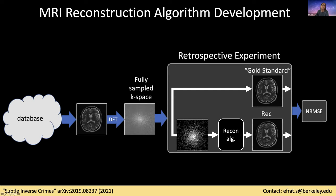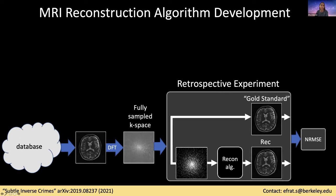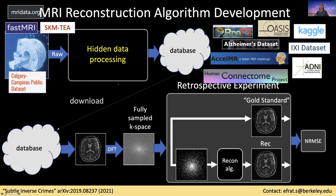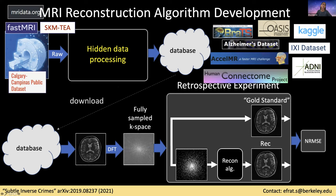Such experiments assume that the fully sampled k-space data are raw data obtained from an MRI scanner. But today, in the deep learning era, thousands of examples are needed for training deep learning models, and therefore it is more common that people download MR images — not k-space data, but images from online databases — and they apply the forward discrete Fourier transform to these images to get the fully sampled k-space data.